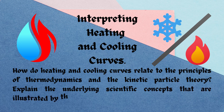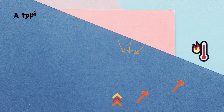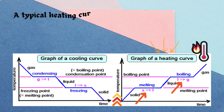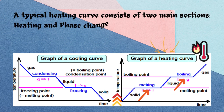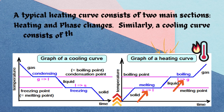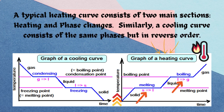Interpreting heating and cooling curves. A typical heating curve consists of two main sections: heating and phase changes. Similarly, a cooling curve consists of the same phases but in reverse order. The heating curve graph shows a steady increase in temperature as heat energy is added to the substance, with temperature increasing linearly with added heat energy.